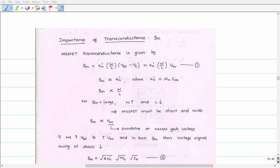However, the voltage signal swing at the drain decreases. The voltage at the drain is given by VG minus VT. Increasing the gate-to-source voltage decreases the voltage at the drain, which decreases the swing at the drain.